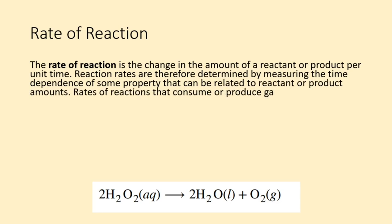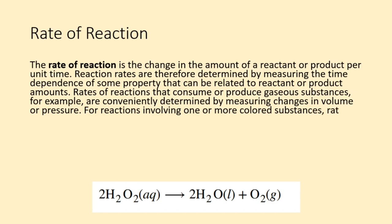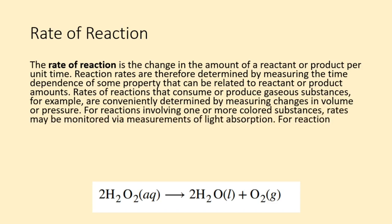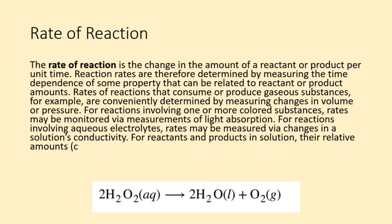Rates of reactions that consume or produce gaseous substances, for example, are conveniently determined by measuring changes in volume or pressure. For reactions involving one or more colored substances, rates may be monitored via measurements of light absorption. For reactions involving aqueous electrolytes, rates may be measured via changes in a solution's conductivity.